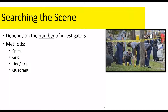We're focusing on search today, and there are different methods: the spiral method, the grid, the line or strip search — which are the same — and the quadrant search. It depends on a couple of things: the crime scene itself, since some methods don't lend themselves well to certain scenes, and how many investigators are available. A smaller agency with only one or two investigators can't do some of these methods because they require multiple people.